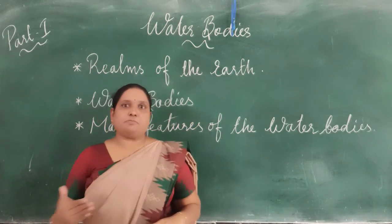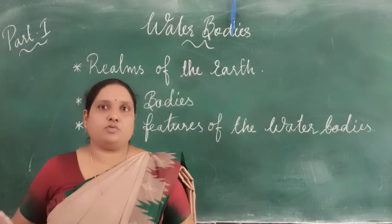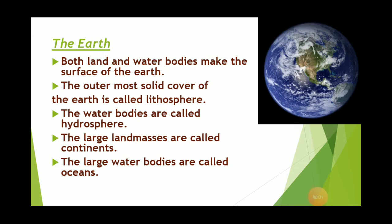Now we will move to the next part of our video where you can see a PowerPoint presentation. Let's continue with the PowerPoint presentation of chapter three — water bodies. Both land and water bodies make the surface of the earth. The outermost solid cover of the earth is called lithosphere, and water bodies are called hydrosphere. The large land masses are called continents and they are seven in number. The large water bodies are called oceans.